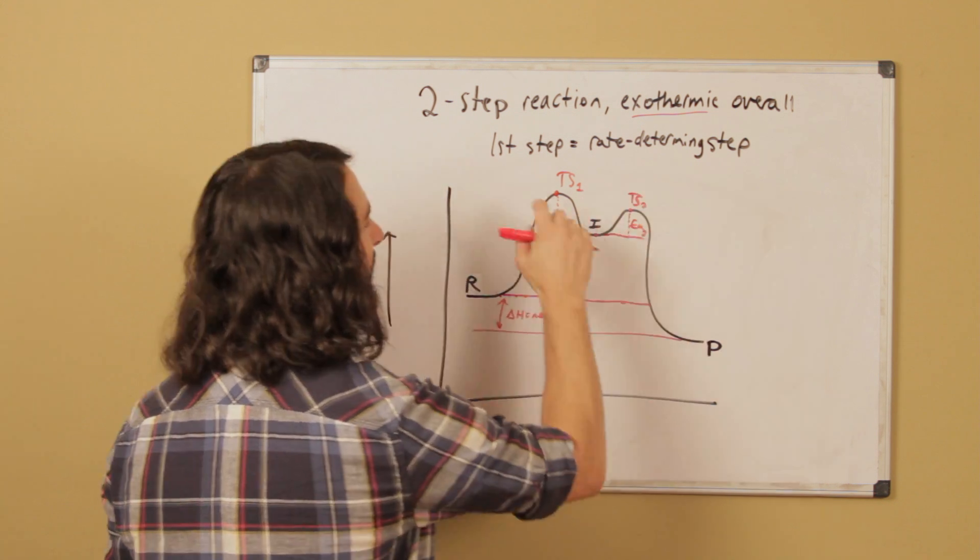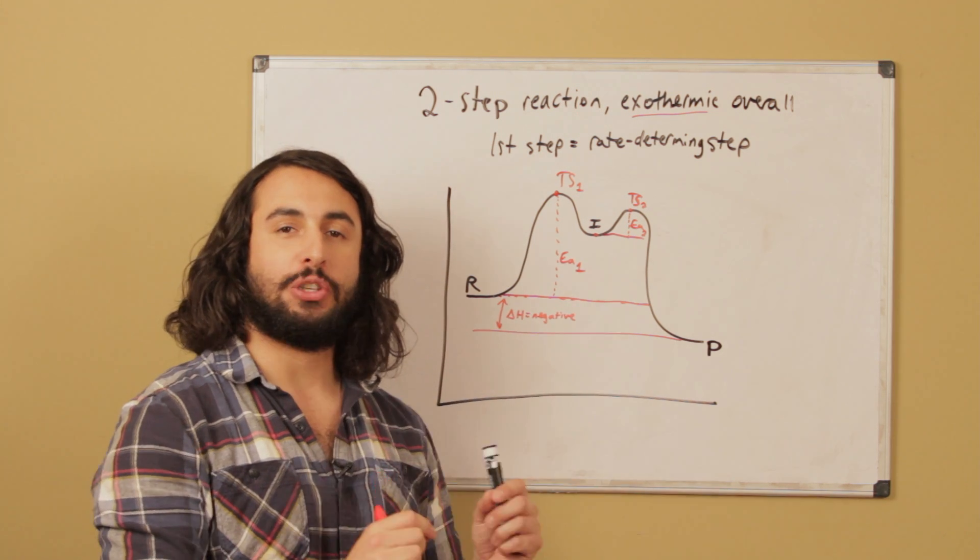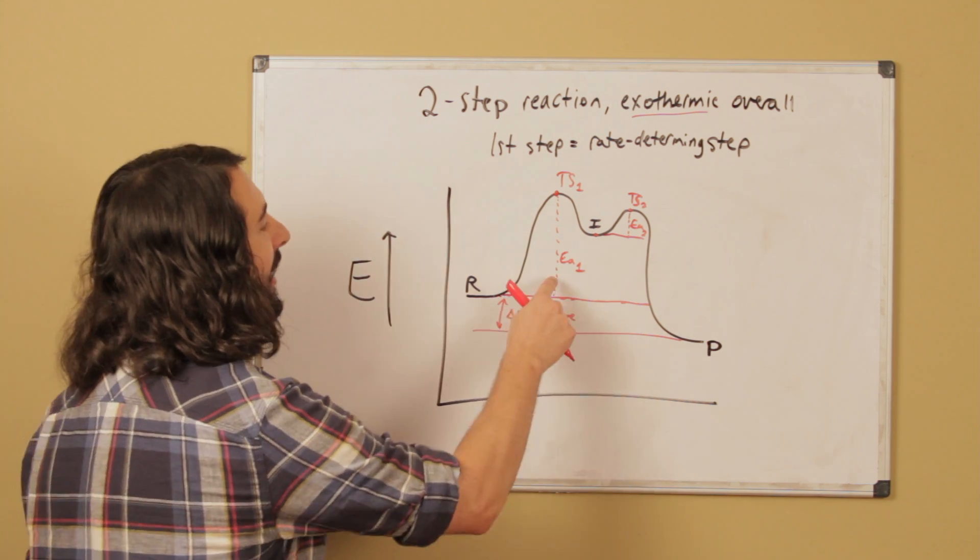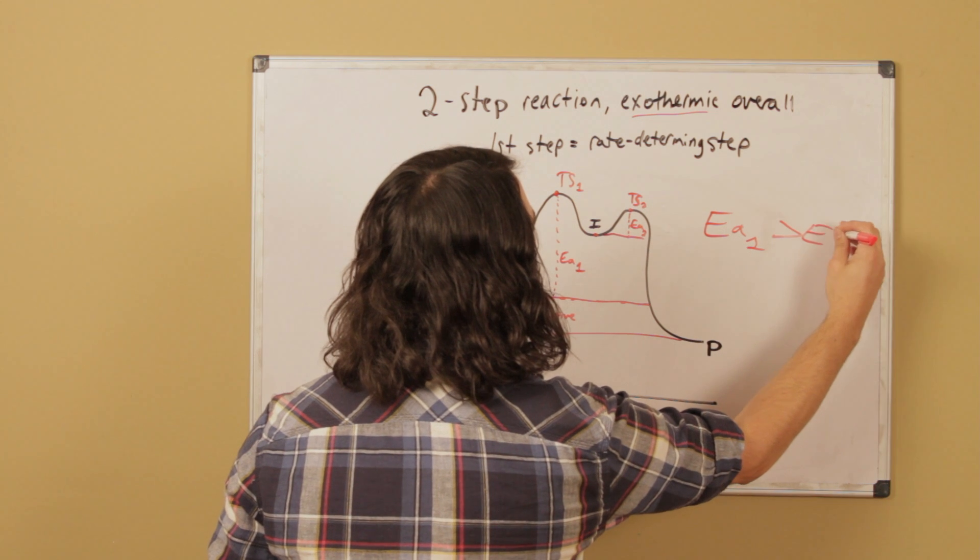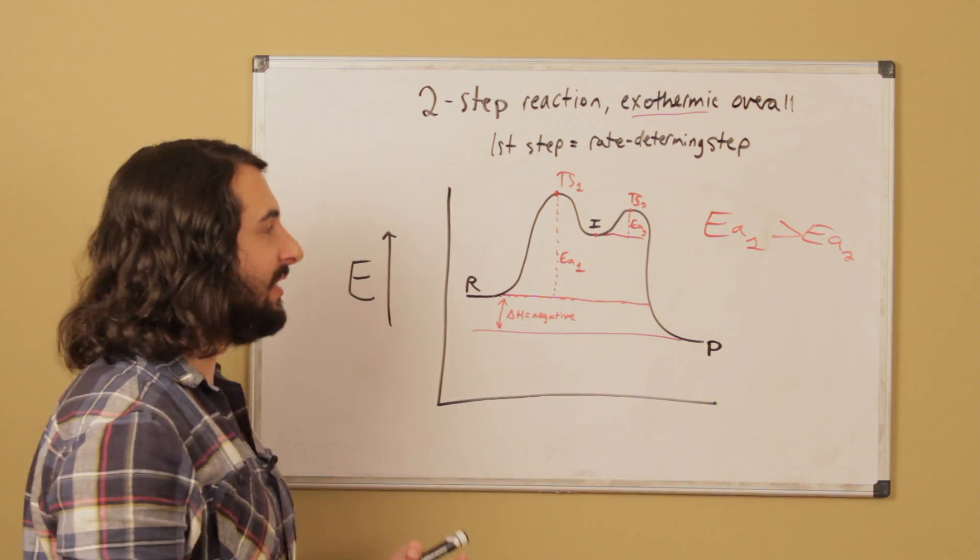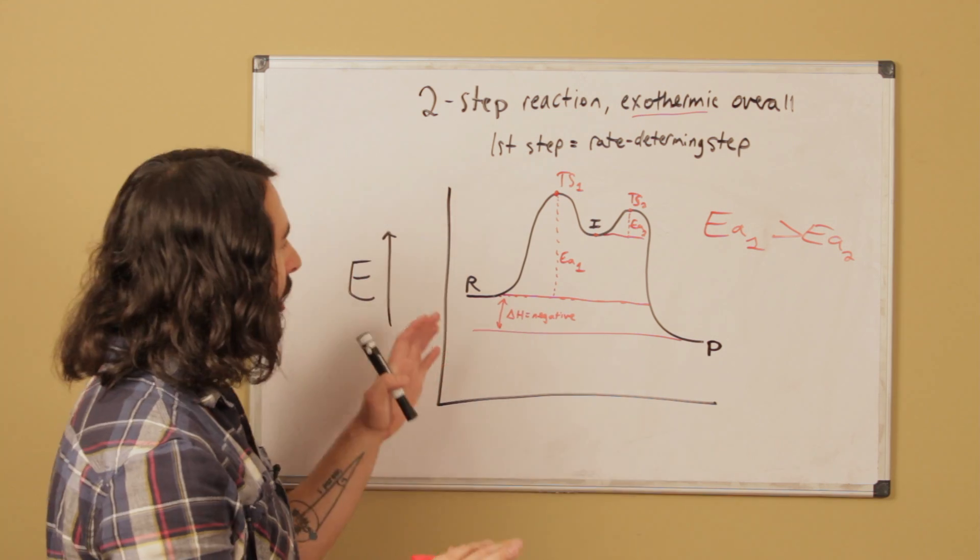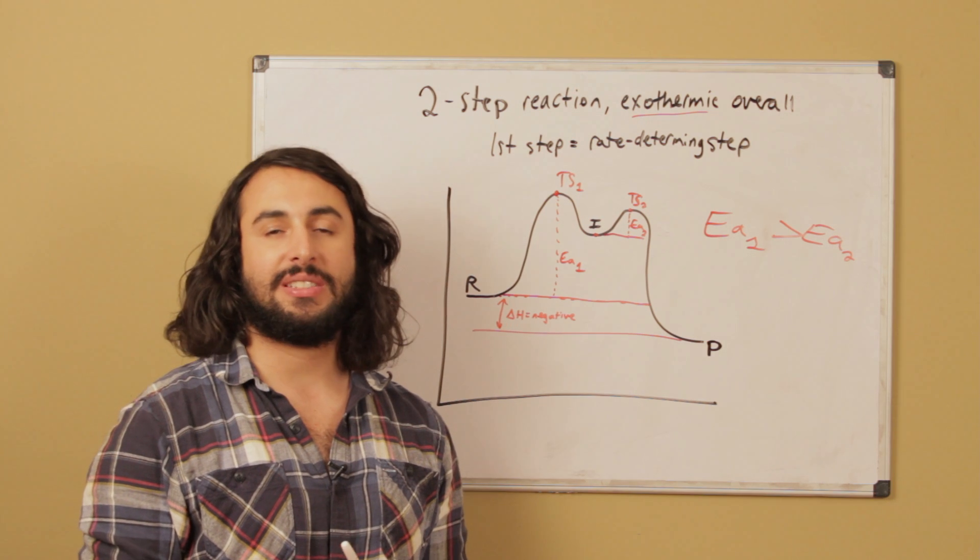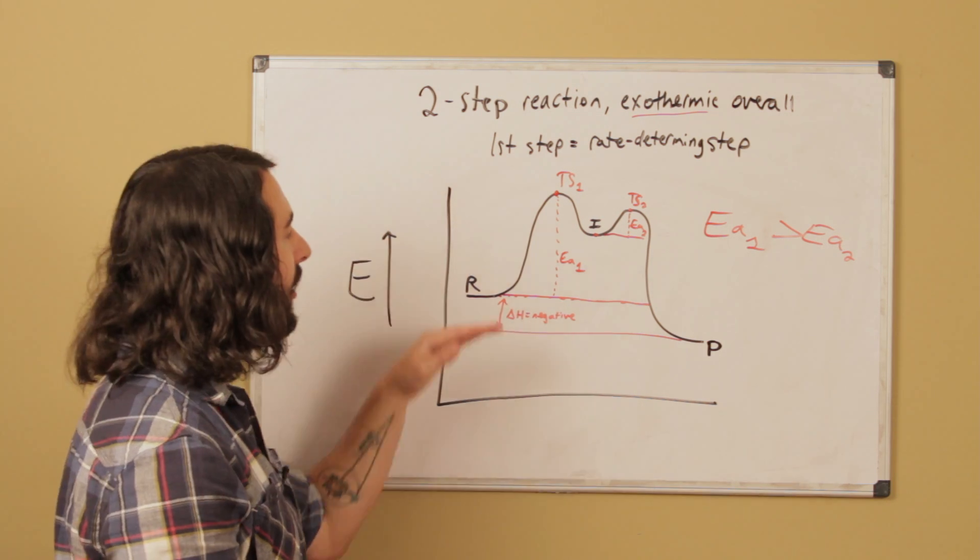When we say that the first step has to be the rate-determining step, what must be true about your energy diagram is that EA1 must be greater than EA2. In solution, things are swimming around, and in terms of kinetics, a larger activation barrier means that molecules must collide with a greater amount of kinetic energy.